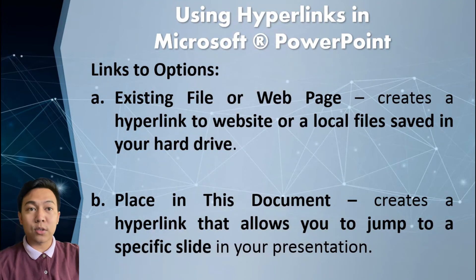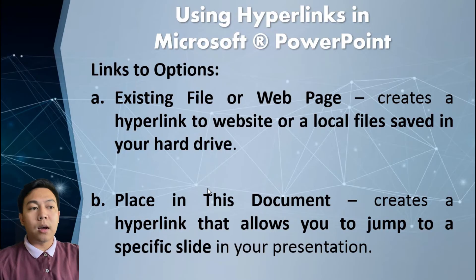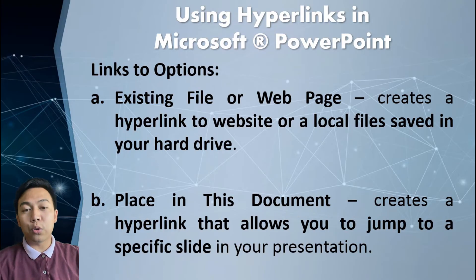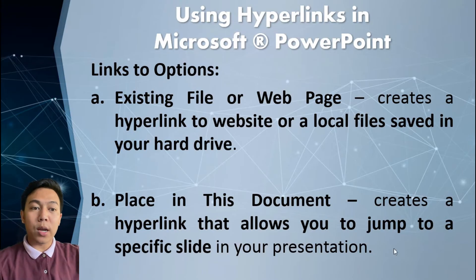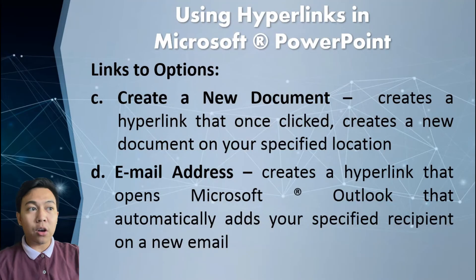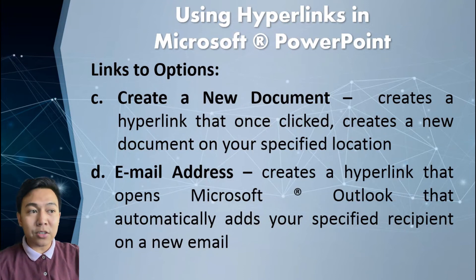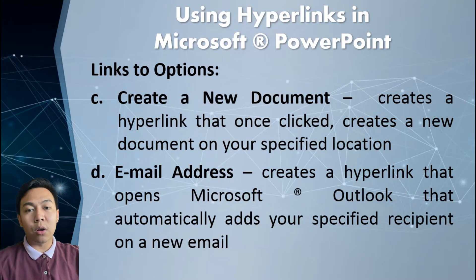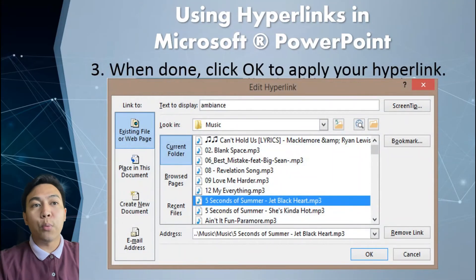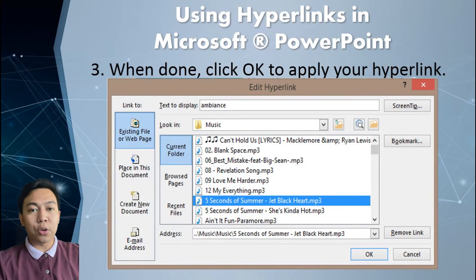Here are the link options. Existing file or web page creates a hyperlink to a website or local file saved on your hard drive. Place in this document creates a hyperlink that allows you to jump to a specific slide in your presentation — for example, clicking an arrow to go to the end of the slide. Create new document creates a hyperlink that, once clicked, creates a new document at your specified location. Email address creates a hyperlink to open Microsoft Outlook that automatically adds your specified recipient on a new email. So those are the four link options. Once done, click OK to apply your hyperlink.